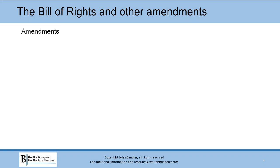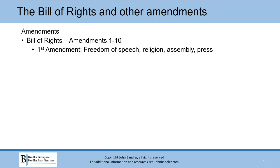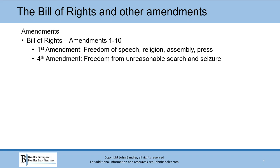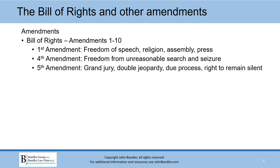The Constitution can be amended and the Bill of Rights — that's amendments one through ten. The First Amendment is about freedom of speech, religion, assembly, and press. I'll talk about that more in a second. The Fourth Amendment is about freedom from unreasonable search and seizure. I'll talk about that a little more too.